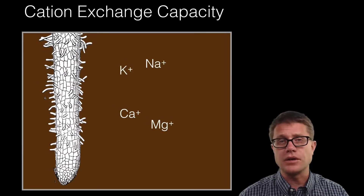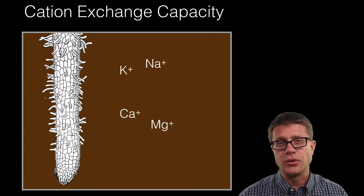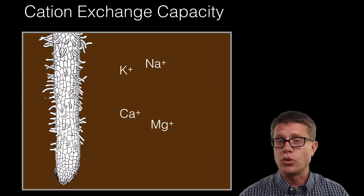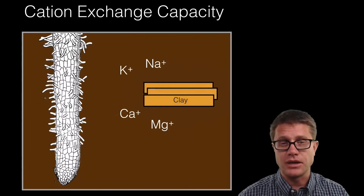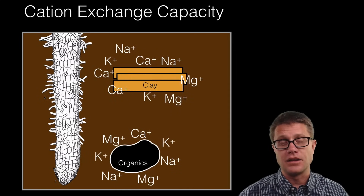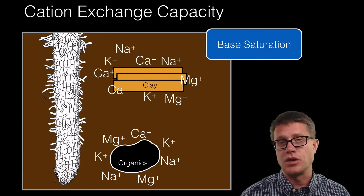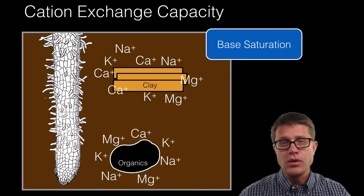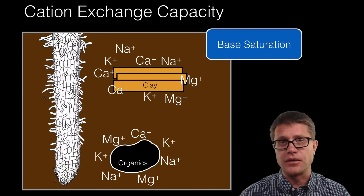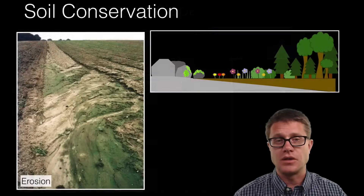Clay is important. If we look at the cation exchange capacity, that is the ability of a soil to deliver important ions, important nutrients to the root itself. The more clay we have — at the microscopic level — and the more organics we have, they are going to be attracting those cations and delivering them to the root itself. Another important property of soil that goes along with the CEC is going to be the base saturation — how can these minerals buffer the acidity of the soil as it comes in? Because that acidity can damage the plants.